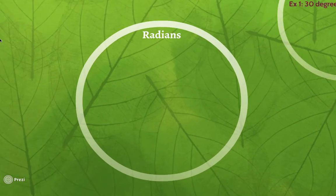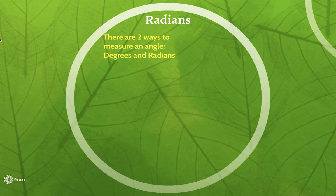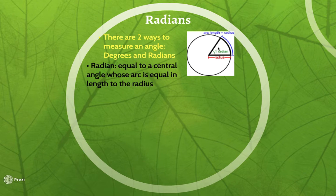So let's figure out what a radian is. What word does the word 'radian' kind of sound like? Radians kind of sounds like the radius of a circle — and that's exactly where it's coming from. A radian is an angle where its arc length is equal to the length of the radius. So one radian means the arc length is the same length as the radius.